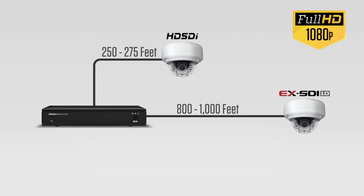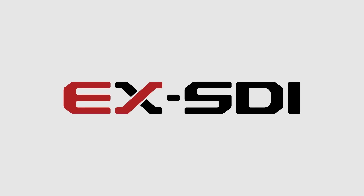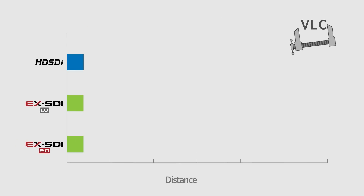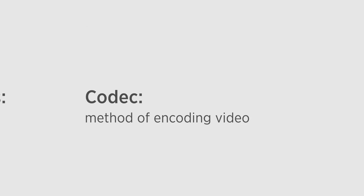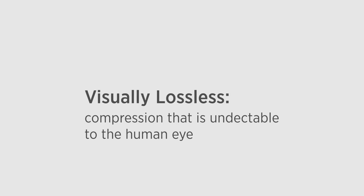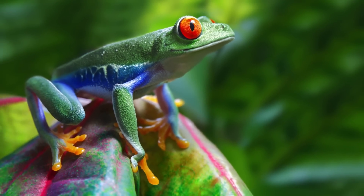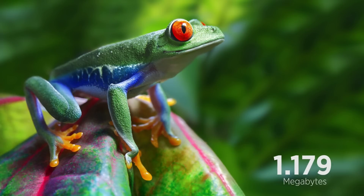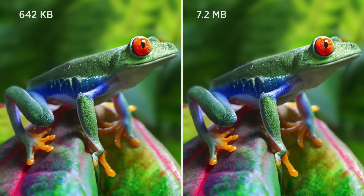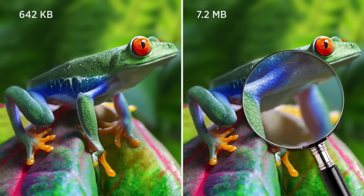How is eXSDI able to transmit full HD video over long distance? Simply put, encoding. eXSDI uses a visually lossless codec, or VLC, to compress and transmit the signal over a long distance. A codec is a method of encoding video, and visually lossless means that it's undetectable to the human eye. For example, the original file size of a high resolution image of a frog was 7.2 megabytes. When we apply a visually lossless compression technique to the image, we can get that file size down to a mere 642 kilobytes — with no visible grain or compression artifacts. That's the power of using VLC.